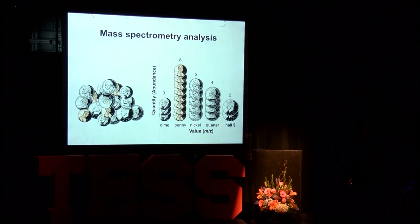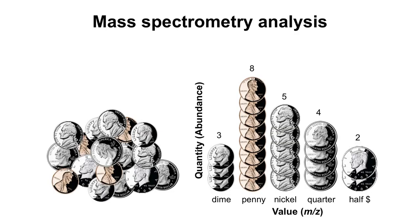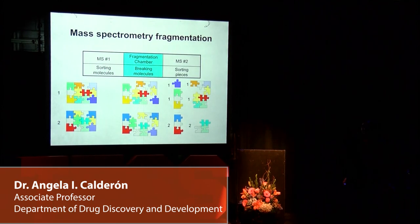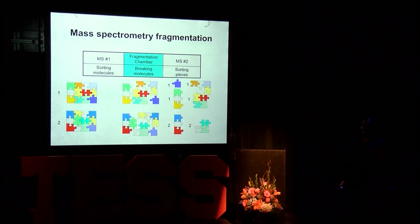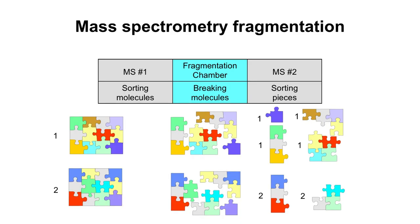I would like to show you how the mass spectrometry detector functions. You see this group of coins — imagine those are a mixture of compounds. This detector will separate compounds based on their weight and on the amount present in the sample. As you see, the quantity or abundance is expressed in the y-axis of this figure. The mass spectrometry detector can also fragment molecules to provide information related to structure. Molecules can be sorted and sent to a fragmentation chamber where they are broken into pieces, allowing us to establish the structure of a compound of interest.